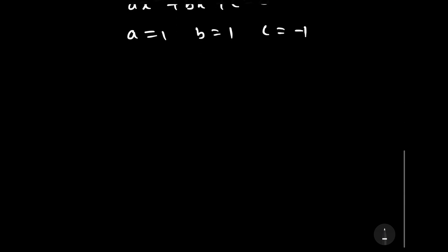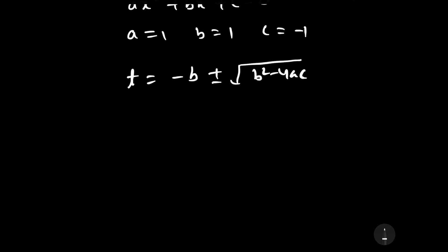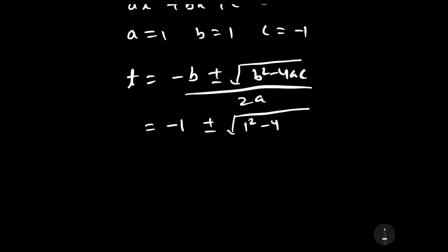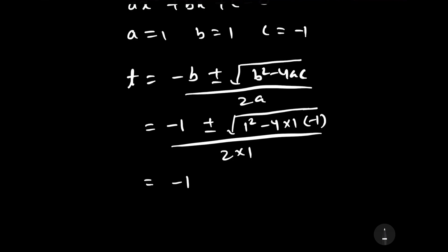The Sridharacharya rule gives the roots of a quadratic equation as (−b ± √(b²−4ac)) / 2a. Putting in the values of a, b, and c, we get (−1 ± √(1 + 4)) / 2, which simplifies to (−1 ± √5) / 2.